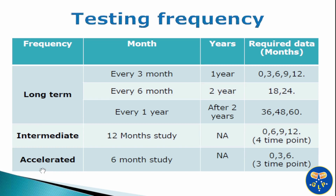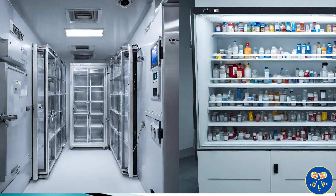Accelerated stability study is designed to increase the rate of chemical degradation or physical change of drug substance or product by using exaggerated or elevated storage conditions. Accelerated stability study is a 6-month stability study. The testing frequency for accelerated stability study is a minimum of 3 time points including the initial and final time points, i.e. 0 month, 3 month and 6 months. The purpose of accelerated stability study is to prove the stability of drug product or drug substance, especially when short term excursions or deviations occur beyond the labelled storage conditions due to stability chamber issues or during transportation or shipment events.